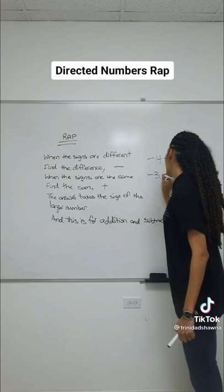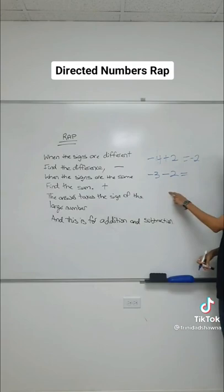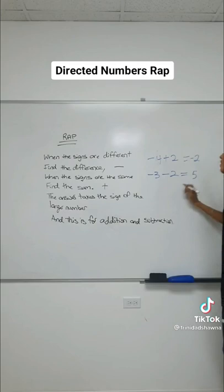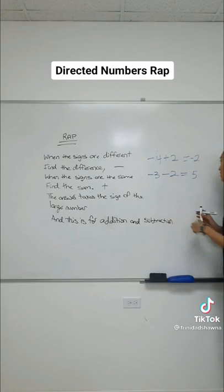Negative 3, negative 2. When the signs are different, we find the difference. When the signs are the same, we find the sum. Here we can see that the signs are the same, so we find the sum. And the sum of 3 and 2 is in fact 5. The answer takes the sign of the larger number, and the larger number is 3. So you take the sign from the larger number. Let's look at one more.